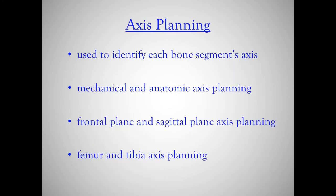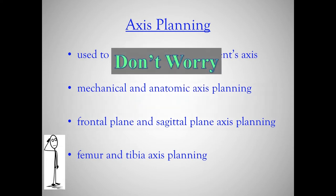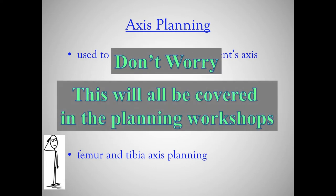What is axis planning? You use it to identify each bone segment's axis — both mechanical and anatomic. There's frontal plane axis planning and sagittal plane axis planning, for both femur and tibia, and they are different. If you're scratching your head, don't worry — this will all be covered in excruciating detail in the planning workshops.